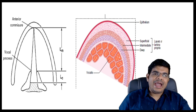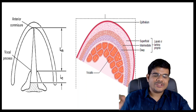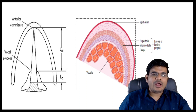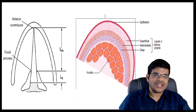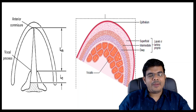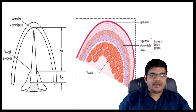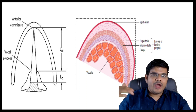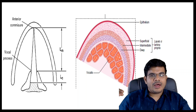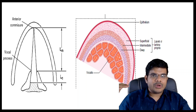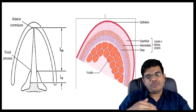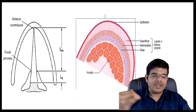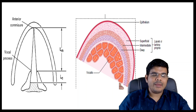Coming to further details on the vibrator — the vocal folds — only the anterior three-fifths of the vocal folds are vibrating. The rest two-fifths is formed by the vocal process of the arytenoid and does not vibrate. These vocal folds have a cover-body mechanism as described by Hirano. The cover is formed by the epithelium and the superficial layer of lamina propria, also called Reinke's space, which is very important for effective vibration. The intermediate layer forms the transition zone, and the body is formed by the vocalis and thyroarytenoid muscle.